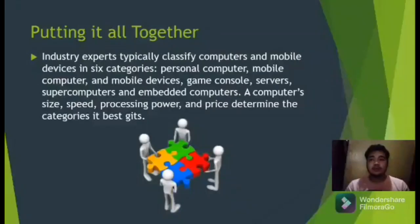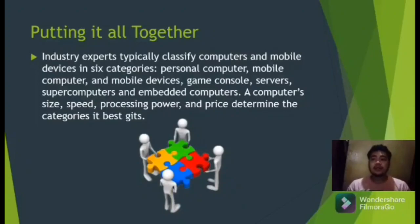Good afternoon. This is the part of my report: Putting it all together. Industry experts typically classify computers and mobile devices in six categories: personal computers, mobile computers, mobile devices, game consoles, servers/supercomputers, and embedded computers. A computer's size, speed, processing power, and price determine the category it best fits.